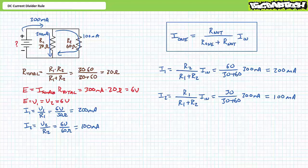First, you should realize more current should travel through the smallest resistor in a parallel relationship and less current should travel through the largest resistor. Secondly, Kirchhoff's current law — what goes in must come out. If 300 milliamps of source current comes into this parallel relationship, 200 plus 100, or 300 milliamps, does indeed come out. Lastly, voltage across elements in parallel is the same: 200 milliamps through a 30 ohm resistor constitutes a 6 volt drop, as does 100 milliamps through the 60 ohm resistor. If you get results that suggest otherwise, you need to perform a tactical retreat and reassess your data.